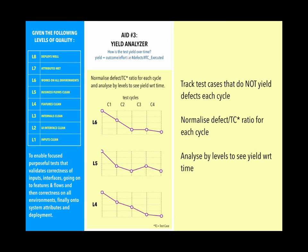If a feature, flow, or performance aspect is hardened, maybe we can avoid retesting it — unless it's fully automated, in which case it doesn't cost much effort anyway. Aid number three is the Yield Analyzer: tracking how test yield changes over time as a ratio of defects to executed test cases, normalized by quality levels, so we know which levels are hardened and which are not, and therefore which test cases we need — or don't need — to execute.